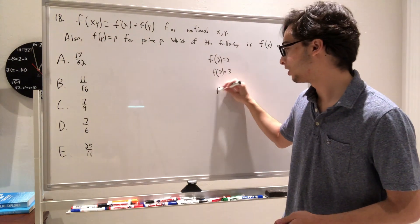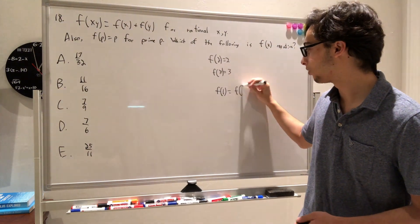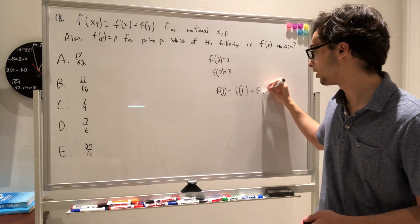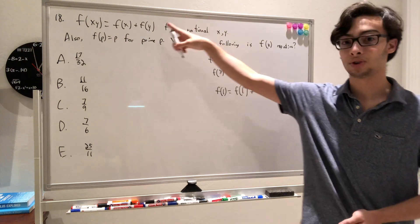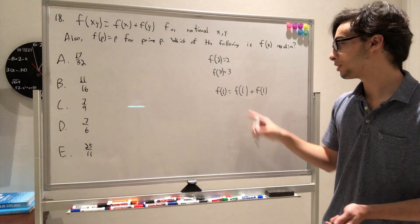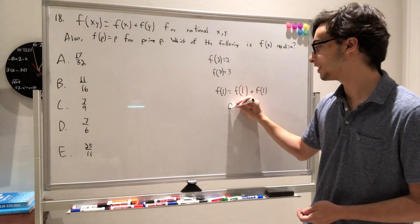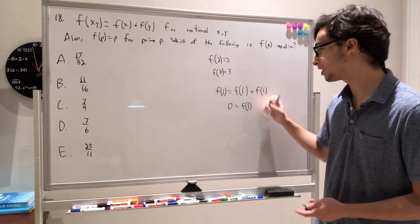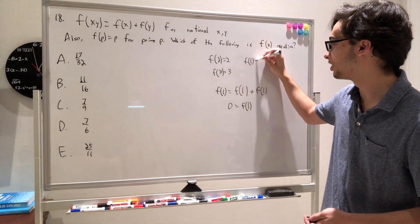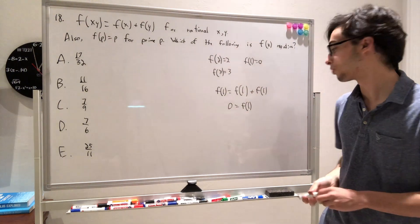We have f of 1 has to equal f of 1 plus f of 1, because if we bring these together using the first rule, we see that these are multiplying together. We can subtract f of 1 from both sides, and we get 0 is equal to f of 1. So f of 1 is equal to 0, and there's many ways to figure that out, but this is just one of those ways.